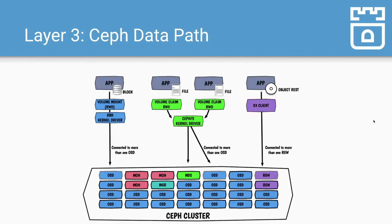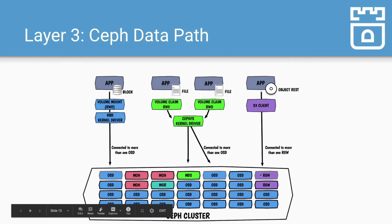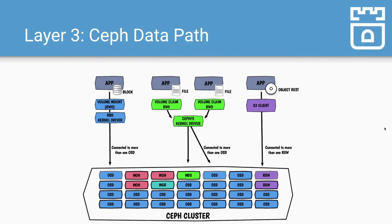Now what does it look like at the data path? You've installed Rook at layer one, you've got the CSI driver with your storage mounted at layer two. Now your application just needs to write and read data to the cluster. Your application already has the volume mounted, and the Ceph RBD kernel driver takes care of writing to the Ceph cluster. That driver connects to the different Ceph daemons — the mons, OSDs, and manager. At the file system layer, it connects to the MDS daemon in Ceph. The S3 client connects to the RGW endpoint, which writes objects into the Ceph cluster.